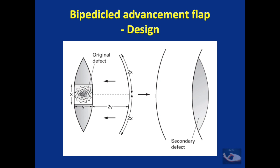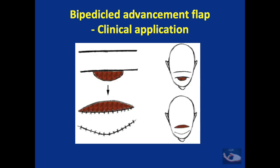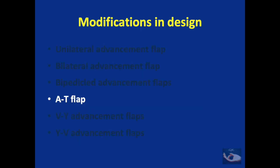The defect is usually made elliptical. The bipedicled advancement flap is planned on one side of this elliptical defect. The width of the flap is twice the width of the defect and the length is four times the length as shown. After the bipedicled flap is advanced there may be a need for skin grafting of the secondary defect. The bipedicled advancement flap can typically be planned on the scalp or on defects on the shin of the tibia.